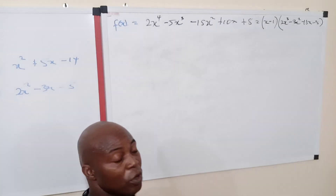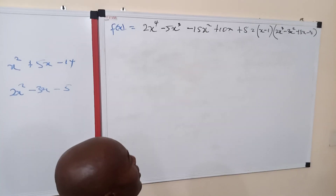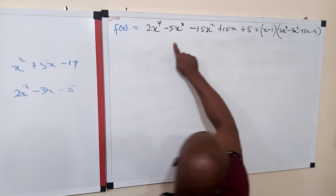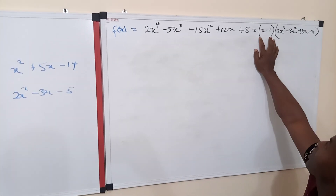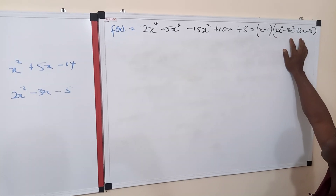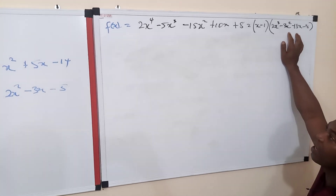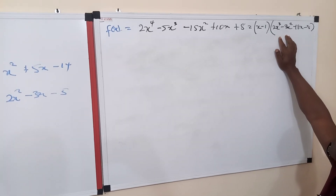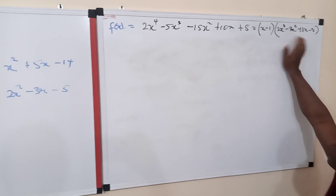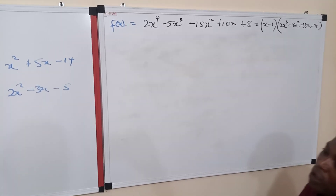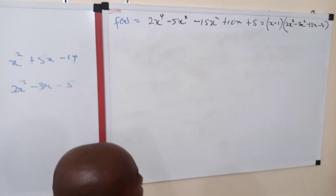Thank you and welcome to the continuation of our previous class. We are at the point where we have gotten one linear factor and the other side is in terms of a cubic expression. Our interest here is to see how we can also reduce this so that we can have four simple linear factors of that equation.